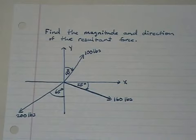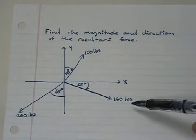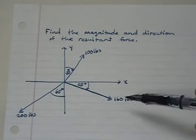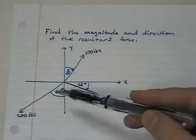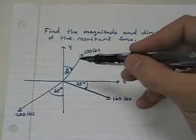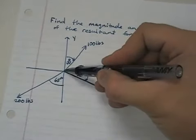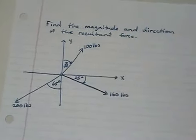Today we're asked to find the magnitude and direction of the resultant force. Given that we have three forces all acting on a point, we have a 100 pound force, a 160 pound force, and a 200 pound force all acting at a central location pulling in different directions.